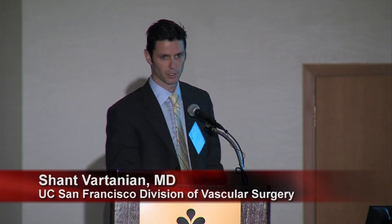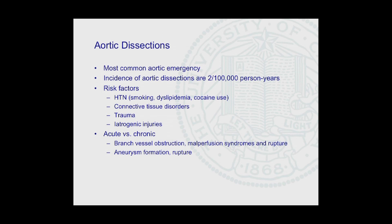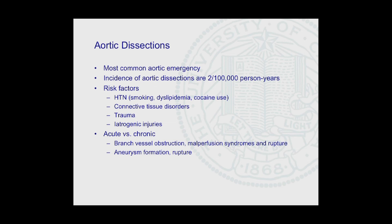We tend to classify these patients both in terms of the extent of the dissection — whether it involves the ascending or descending aorta — and also temporally, where symptoms within two weeks are typically classified as acute and those after two weeks as chronic. In acute presentations, you worry not only about branch vessel obstruction and malperfusion syndromes, but also rupture. In the chronic phase, slightly different problems: aneurysm formation over time and, of course, rupture.